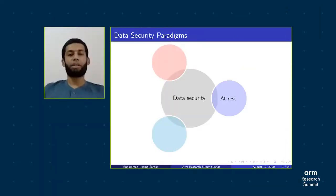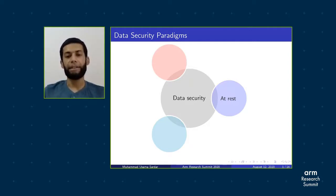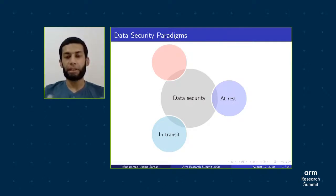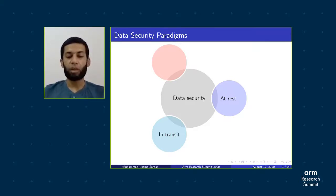There are three main pillars of data security. The first one is data at rest — for example, data residing in a hard disk. The second one is data in transit — for example, in untrusted public networks. There are well-established techniques for both of these types: disk encryption techniques for the first one and TLS for the second one.